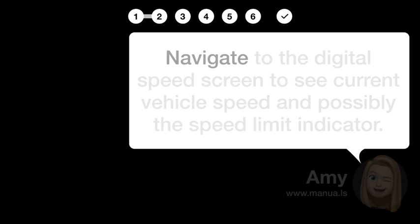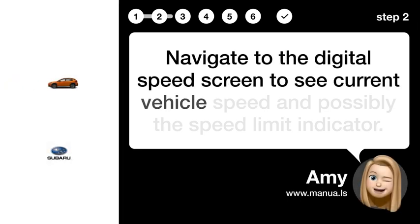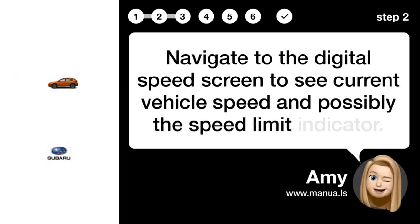Step 2: Navigate to Speed. Navigate to the Digital Speed Screen to see the current vehicle speed and possibly the speed limit indicator.